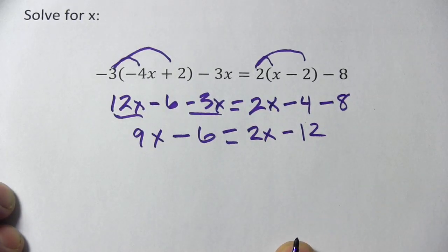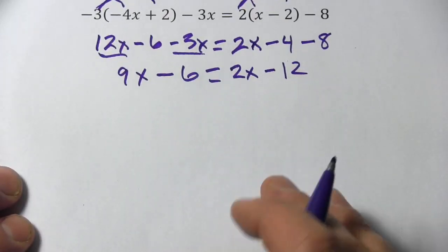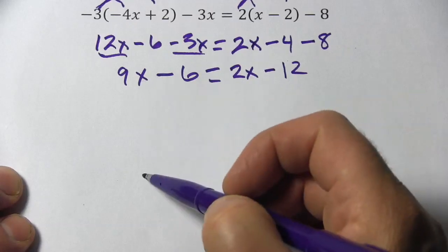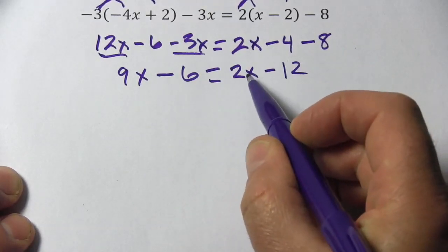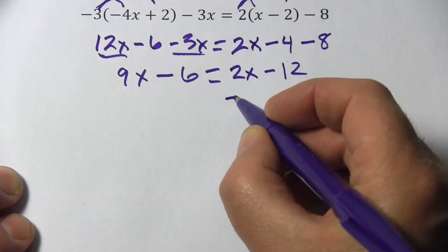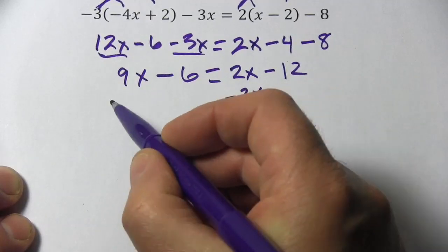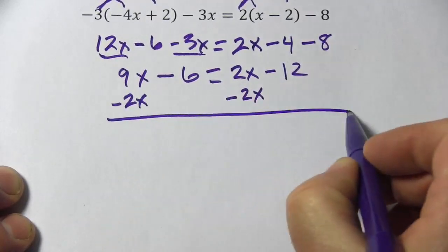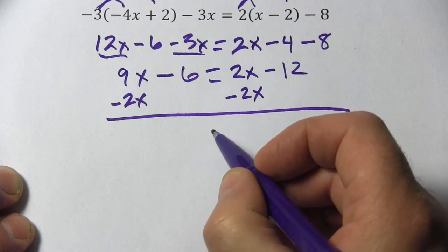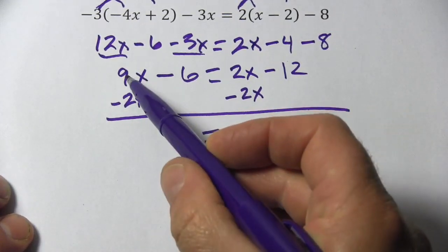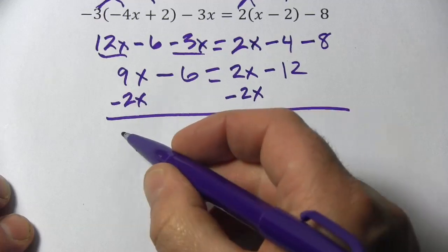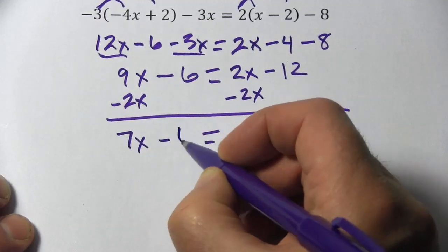Alright, we've combined our like terms. The next issue is that we have x terms on both sides of the equation. So we need to get rid of one of them. I think I'm going to get rid of this 2x over here by subtracting 2x. So over here, 2x minus 2x is 0. So we just get negative 12 on the right side of the equation. Here, 9x minus 2x is 7x. And then we have our minus 6.